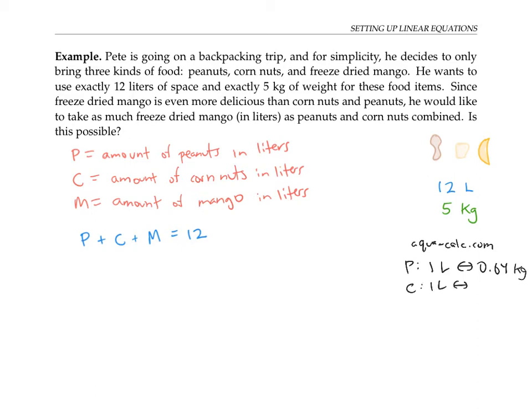For corn nuts, one liter is 0.36 kilograms. And for freeze dried mango, one liter is 0.1 kilograms.